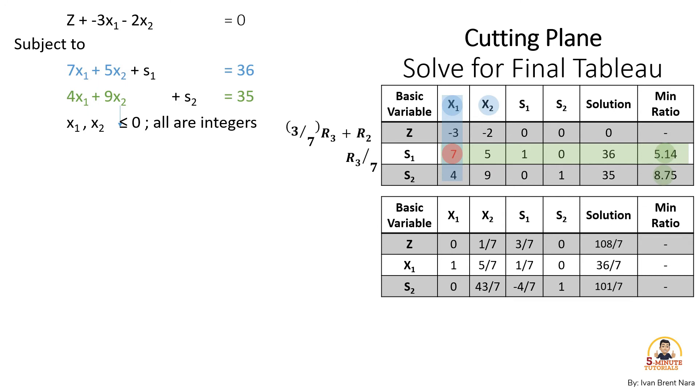For example, let's solve the coefficient of x₁ under the objective function which is negative 3. So 3/7 times 7 plus negative 3 equals 0 and so on.